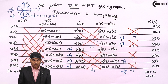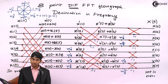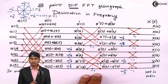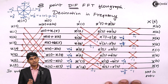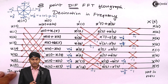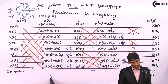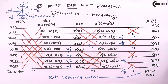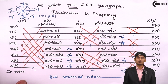This is the basic flow diagram of a DIF-FFT flow graph. It contains three stages: Stage 1 has the longest crisscrosses spanning 8 lines; Stage 2 has shorter crisscrosses between groups of 4 lines; and Stage 3 has the shortest crisscrosses between 2 lines. X of n is in order, while X of k is in bit-reversed order.